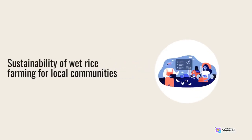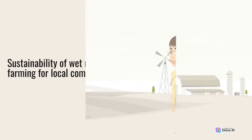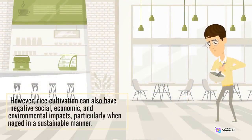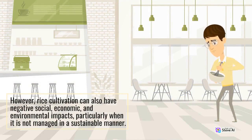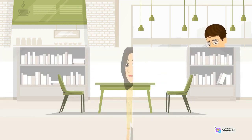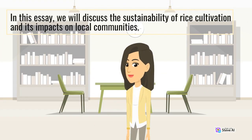Sustainability of wet rice farming for local communities. Rice cultivation is a critical source of livelihood and food security for millions of people around the world, particularly in Asia where it is a staple crop. However, rice cultivation can also have negative social, economic, and environmental impacts, particularly when it is not managed in a sustainable manner. In this essay, we will discuss the sustainability of rice cultivation and its impacts on local communities.